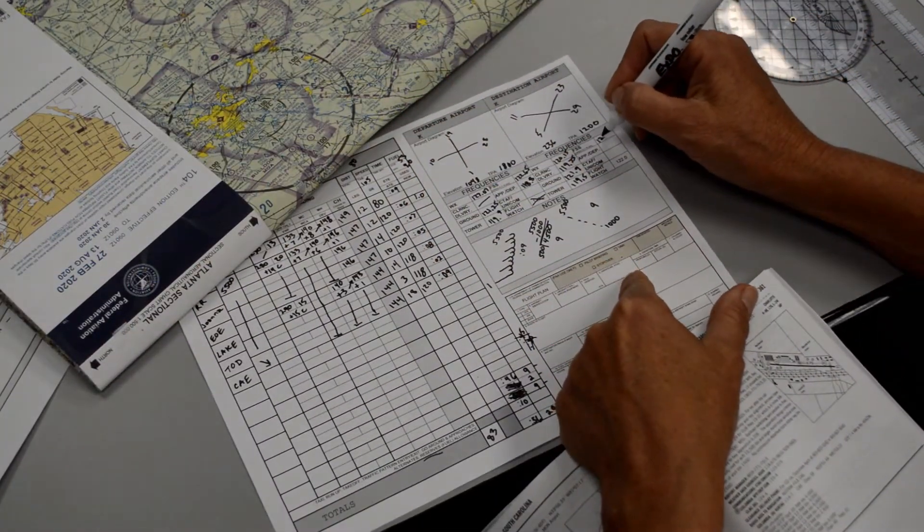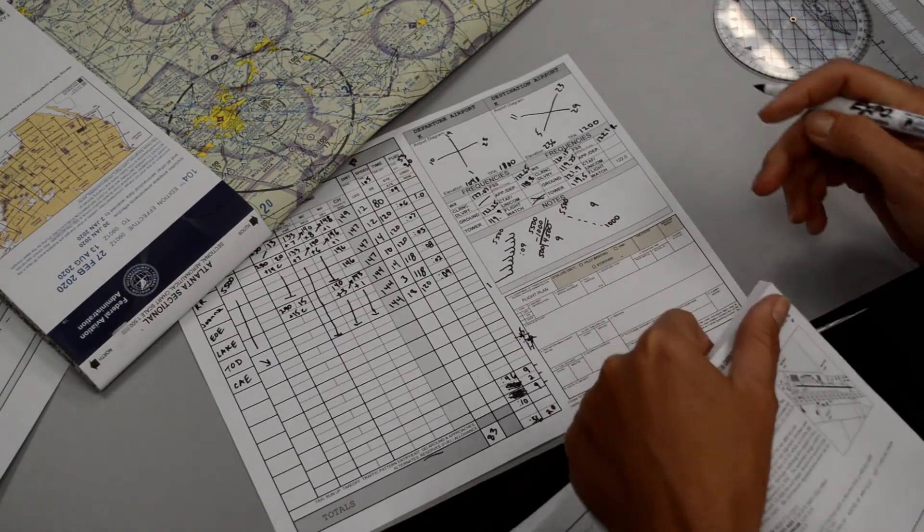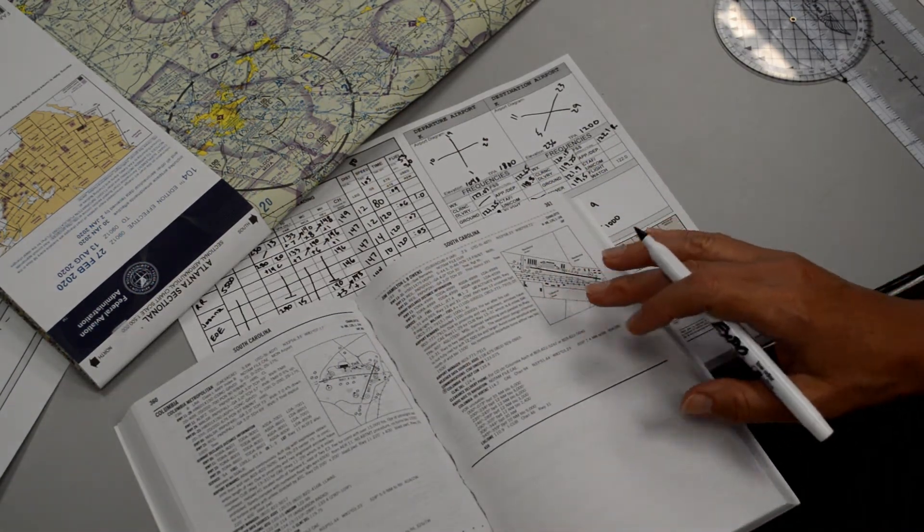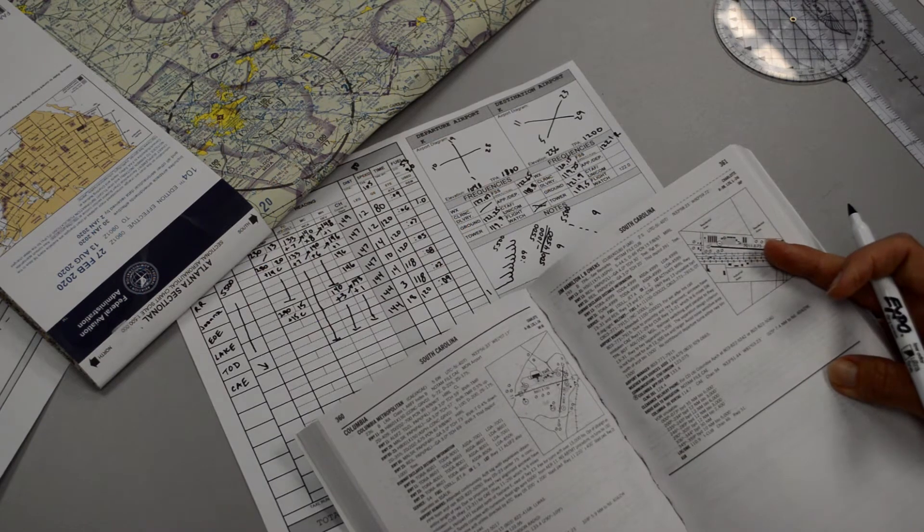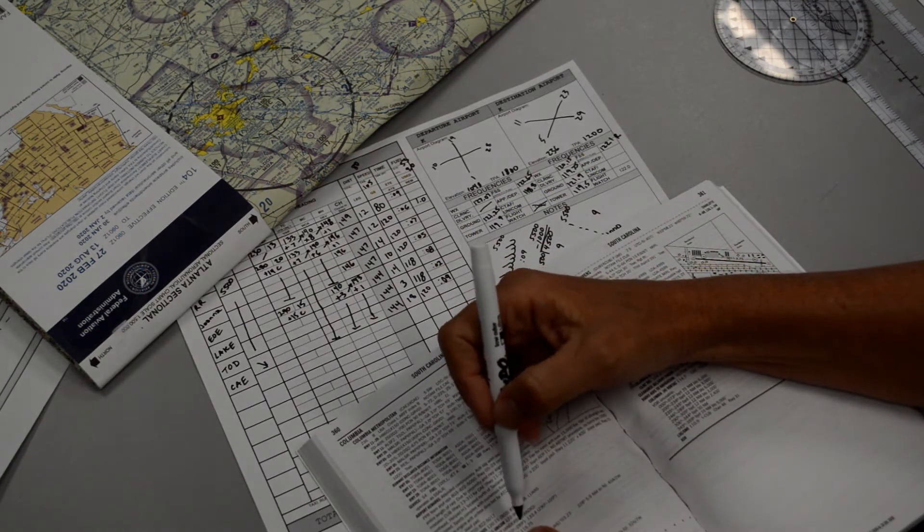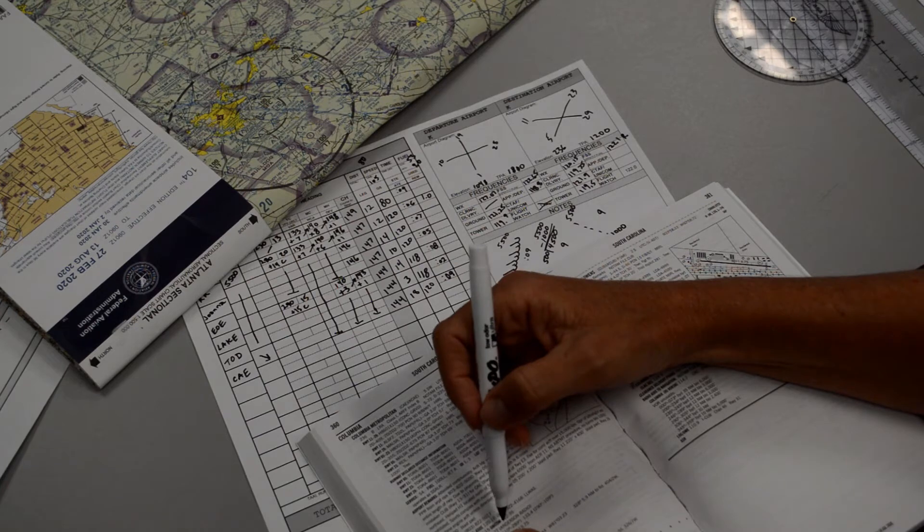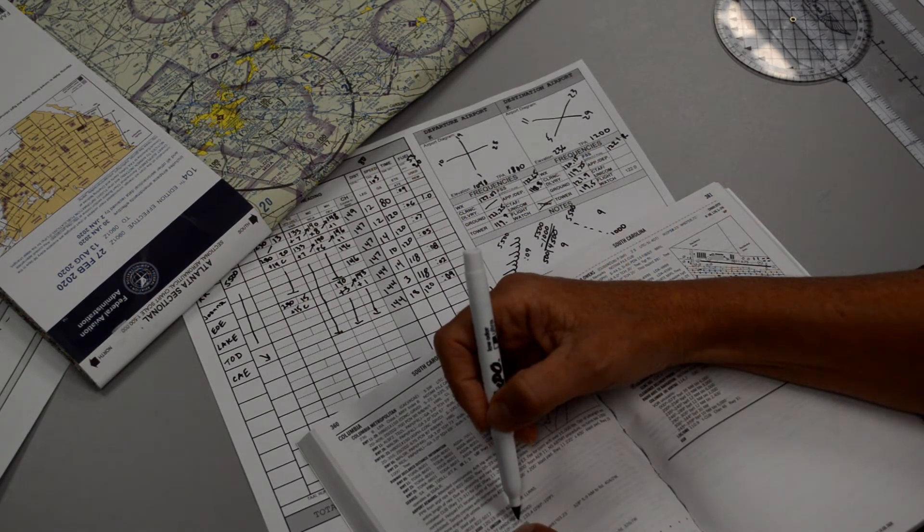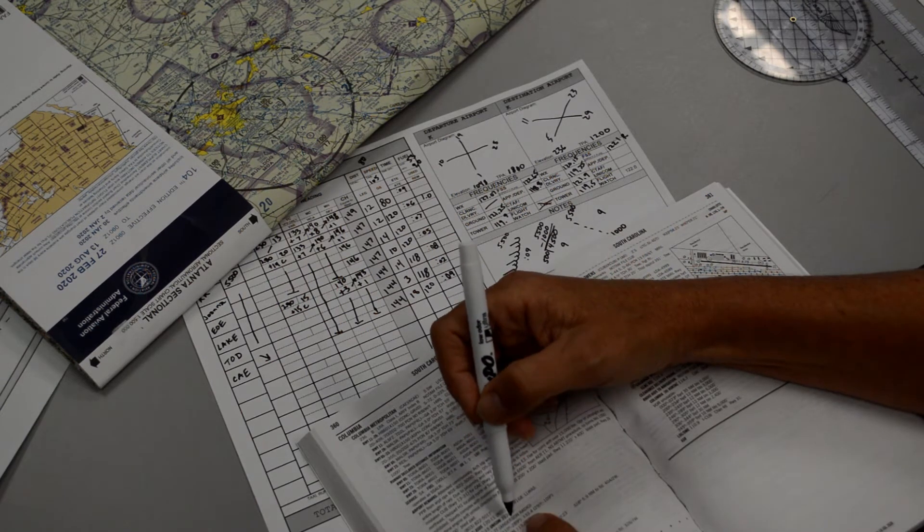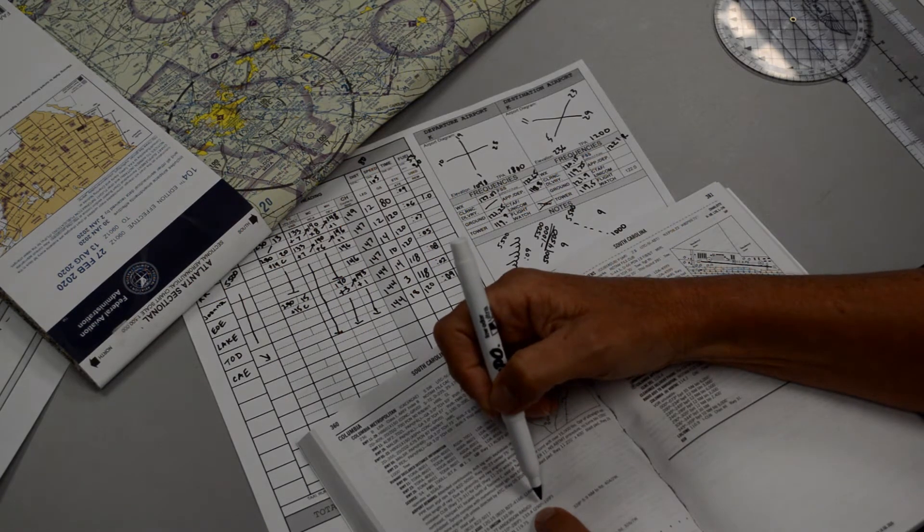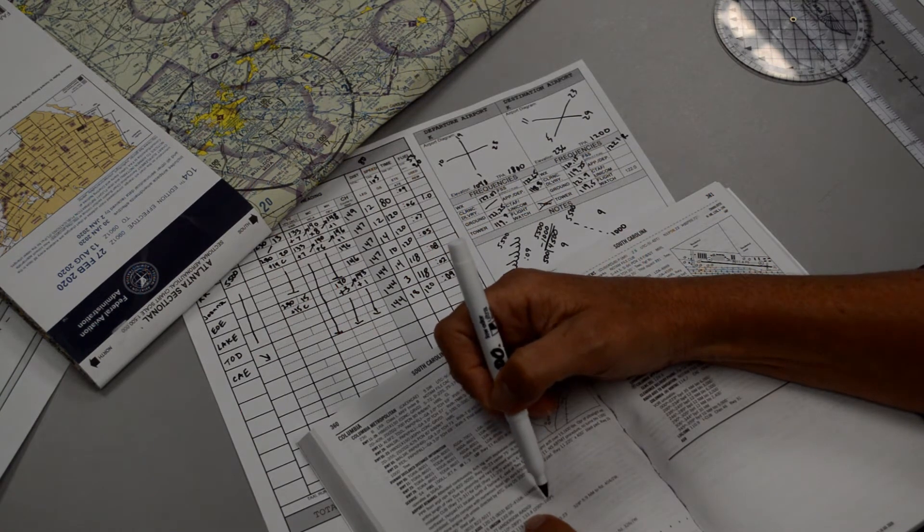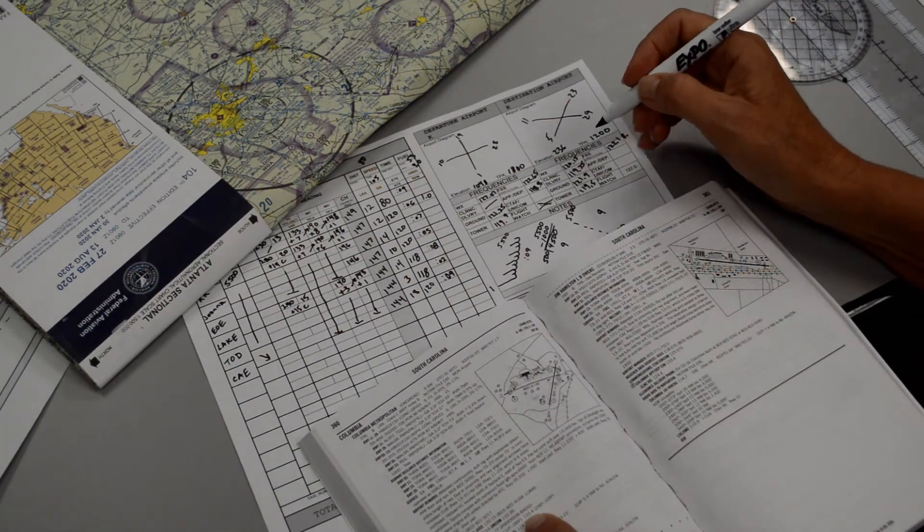So I can put that in there, 122.1 with the R. And then we had explained what the R means in a prior video, so I won't go through and explain that again. And then we have the Columbia approach frequency. Looks like it's going to be, they give us two different frequencies. So it's saying that if we're arriving from somewhere between 110 degrees to 289 degrees, we should contact them or expect to contact them on 124.15. If we're arriving somewhere between 290 degrees to 109 degrees, we should expect to use them on 133.4. We are arriving in this location, so we will expect 133.4.